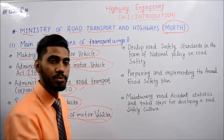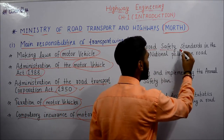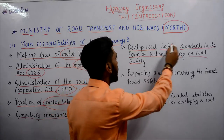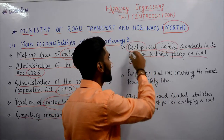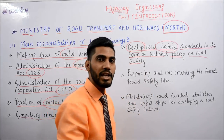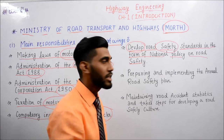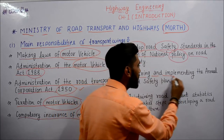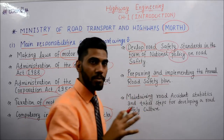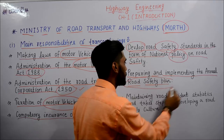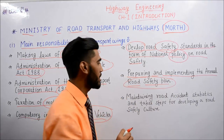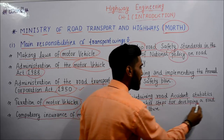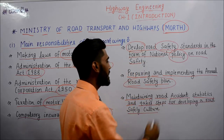Compulsory insurance of the motor vehicle — जो motor vehicles हैं उनके लिए compulsory insurance होना चाहिए, यह भी Transport Wings देखती है. Develop road safety standards in the form of national policy on road safety — road safety के लिए policies बनाना Transport Wings करती है. Next: preparing and implementing the annual road safety plan, जो Transport Wings की मदद से बनाया जाता है.